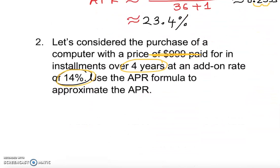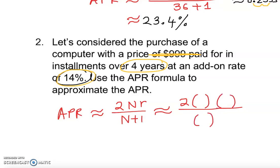APR ≈ 2Nr/(N+1). Let's substitute. 2 times N - in this case, 4 years, so 4 times 12, which is 48 - times r, which is 14%, over 48 plus 1. Now we're ready to use the calculator.